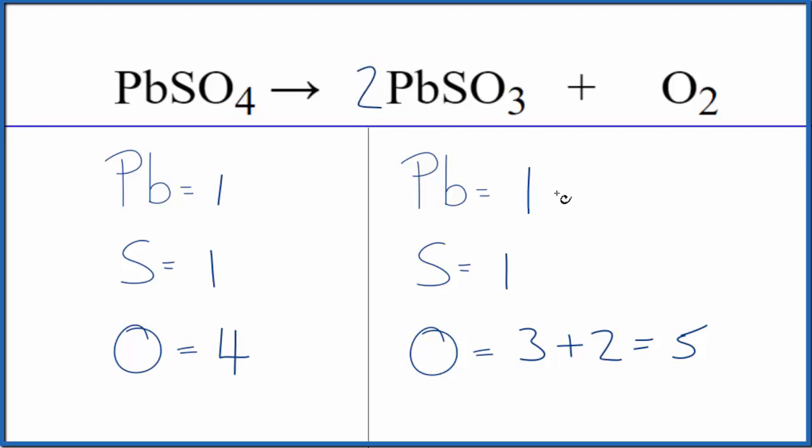One times two, that gives us two lead atoms. One times two, that'll give us two sulfur atoms. Let's update the oxygens. And we have two times three, that's six, plus two. That gives us a total of eight oxygens.